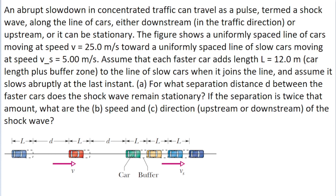This cluster can move along the traffic either downstream or upstream. If cars are approaching the shockwave from the left at a faster rate than cars are leaving it, the pulse will move against the traffic, or upstream. But if cars are entering the pulse more slowly, the cluster will continue moving to the right and the shockwave will travel downstream.